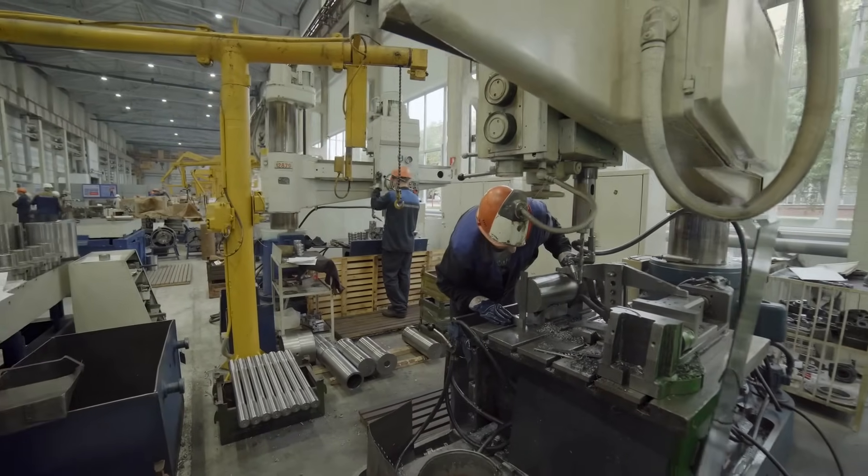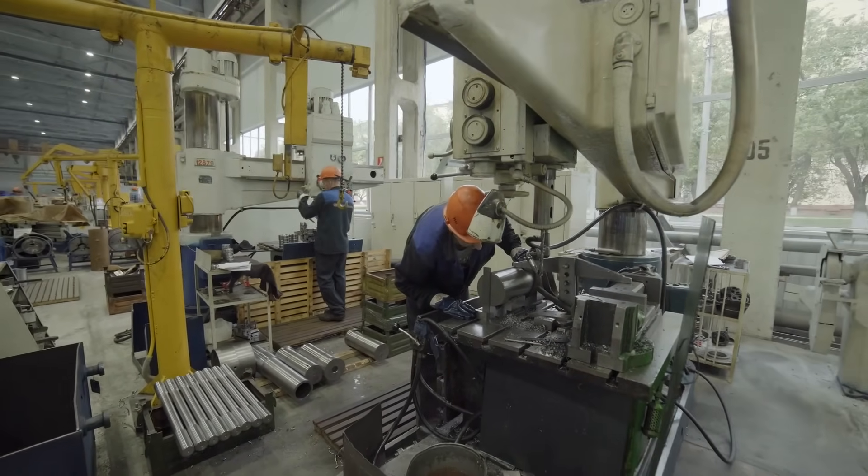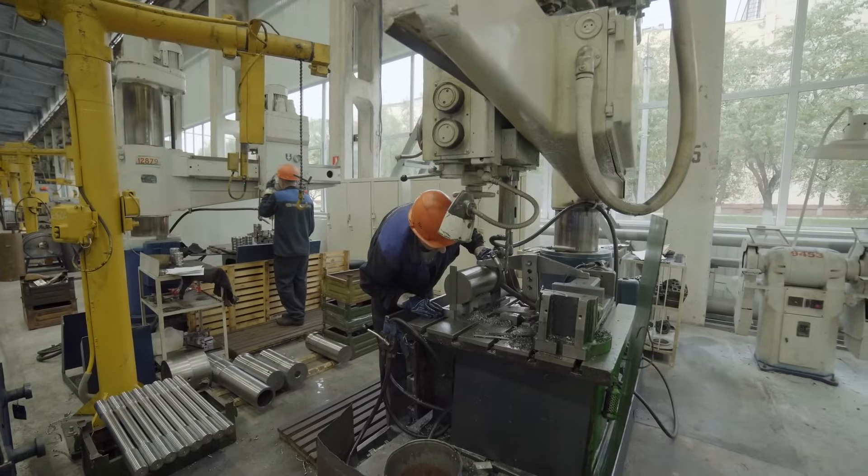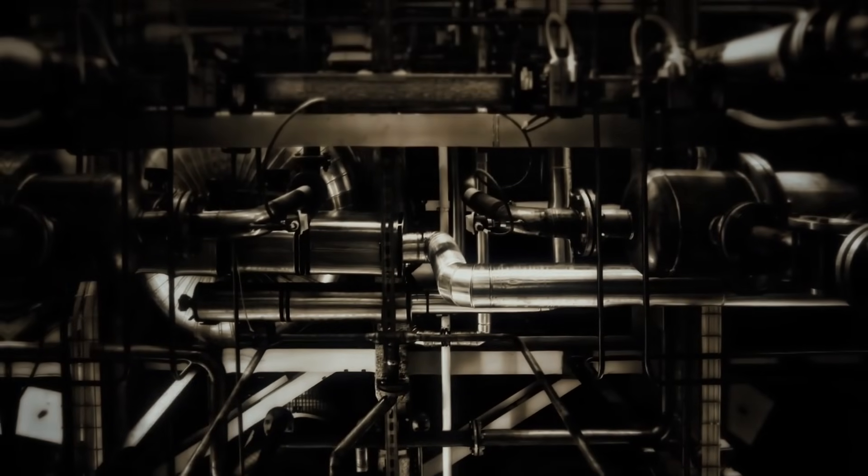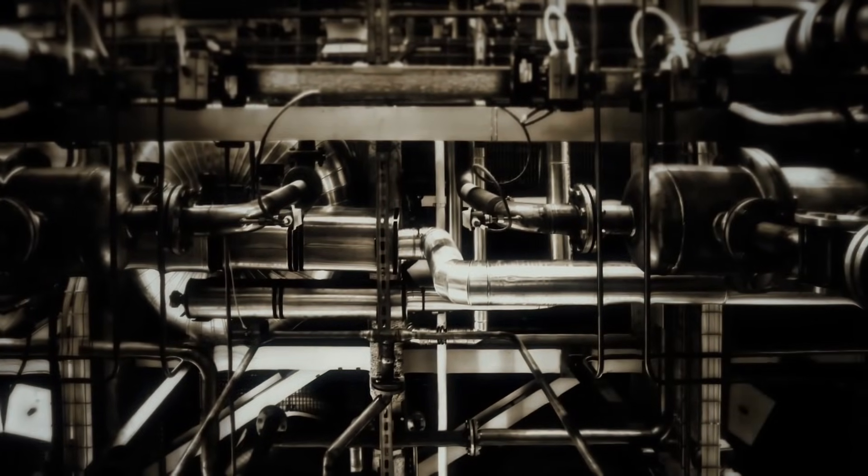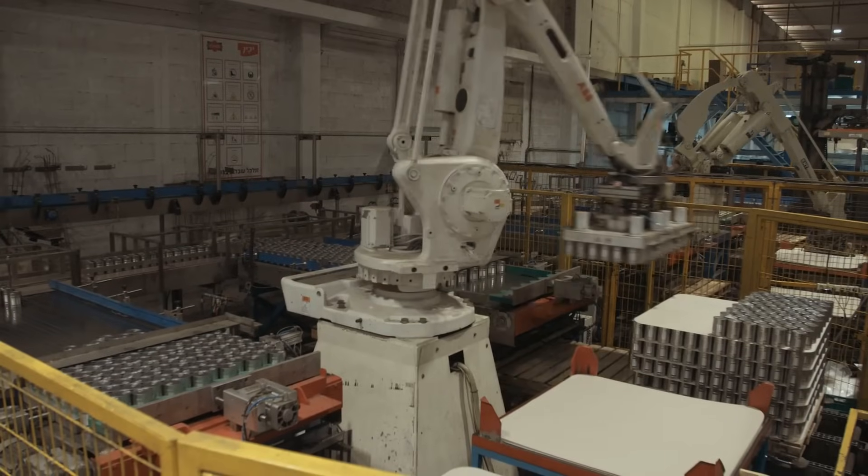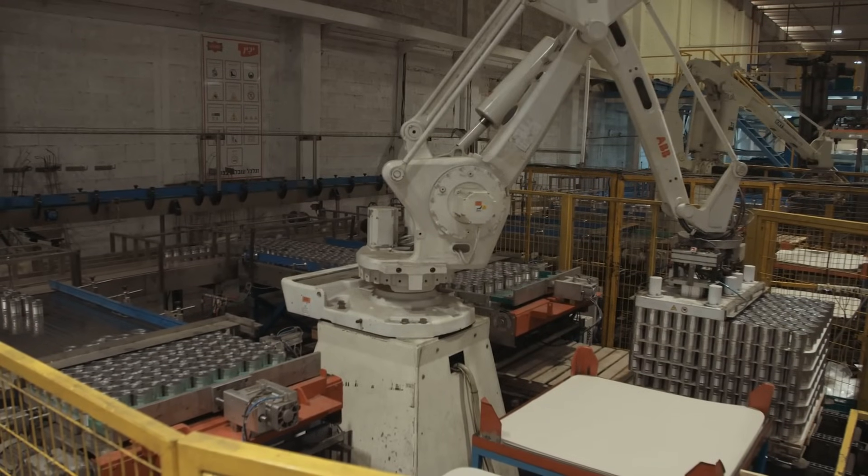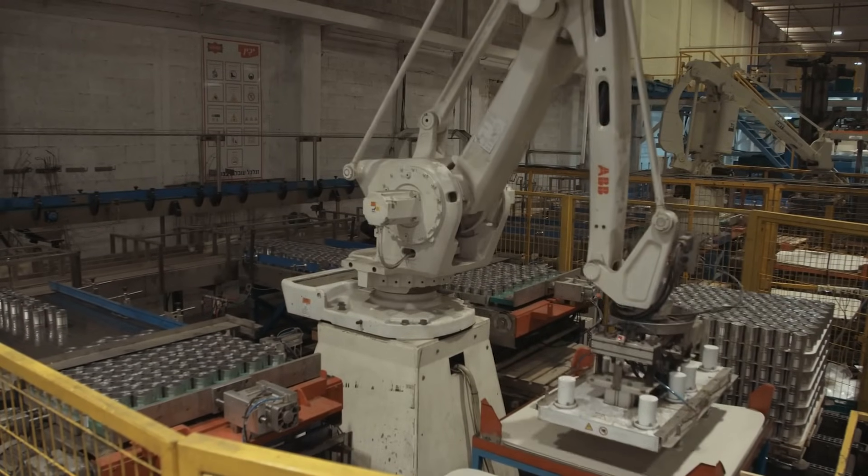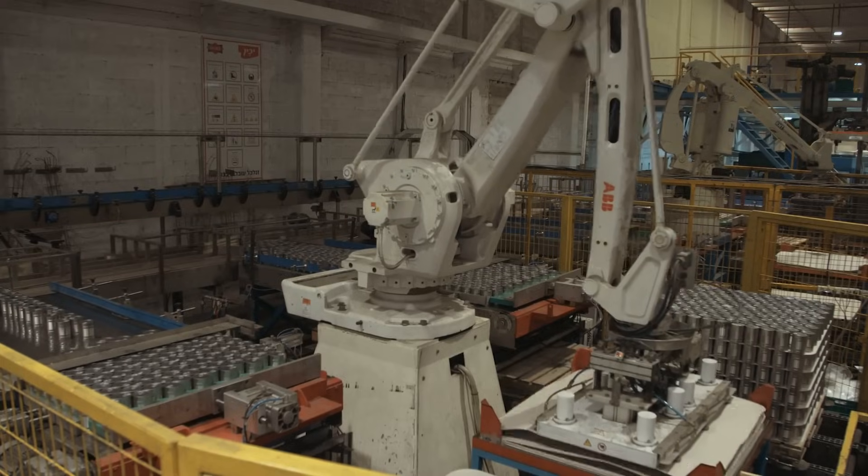The magic of the assembly line lies not just in its efficiency, but in its visual perfection. Rows of identical parts being installed in identical ways, over and over, become hypnotic. Humans once performed these jobs with painstaking effort. But today, machines deliver precision and speed that humans simply can't match.